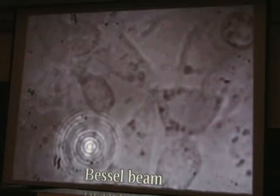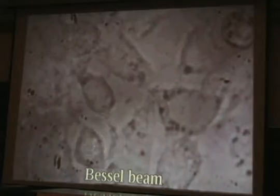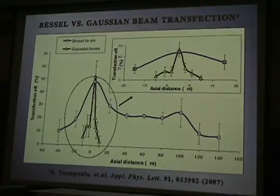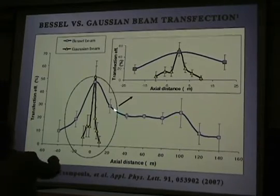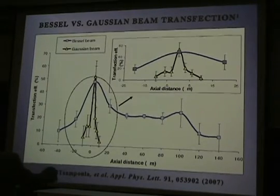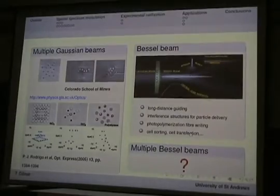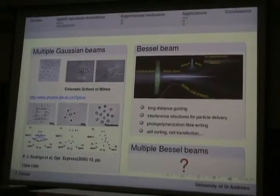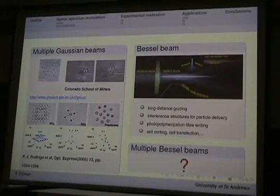Now, this is not an issue with Bessel beams because it's like a long and thin needle of light. This is an example. You can see the nice central core surrounded by several rings. And, this is a comparison of transfection efficiency on the axial distance for the Gaussian and the Bessel beam. You can see that the Gaussian beam can work properly only in a really tiny region, while the Bessel beam can work on distances almost 200 micrometers. Now, the step forward would be the possibility to multiplex and control Bessel beams the same way as we can do with Gaussian beams. So my talk is about this.